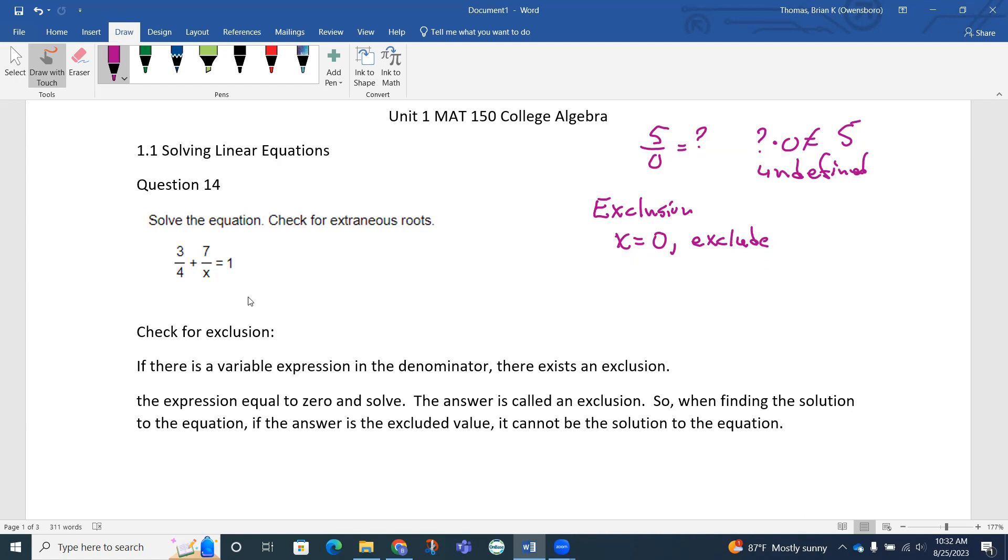What that means is if I solve this equation and end up with 0 as a solution, we can't use it. Because if I put a 0 in for x, I have 3 fourths plus 7 over 0 equals 1. This 7 over 0 creates a division error. We can't have a division error. This is going to be considered an exclusion. This will not equal 1. Since we're dividing by 0 here, we can't even get an answer. It's going to be undefined.